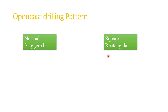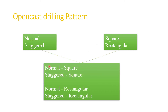There are four types of drilling patterns, combining normal and staggered with square and rectangular arrangements: normal square pattern, staggered square pattern, normal rectangular pattern, and staggered rectangular pattern.